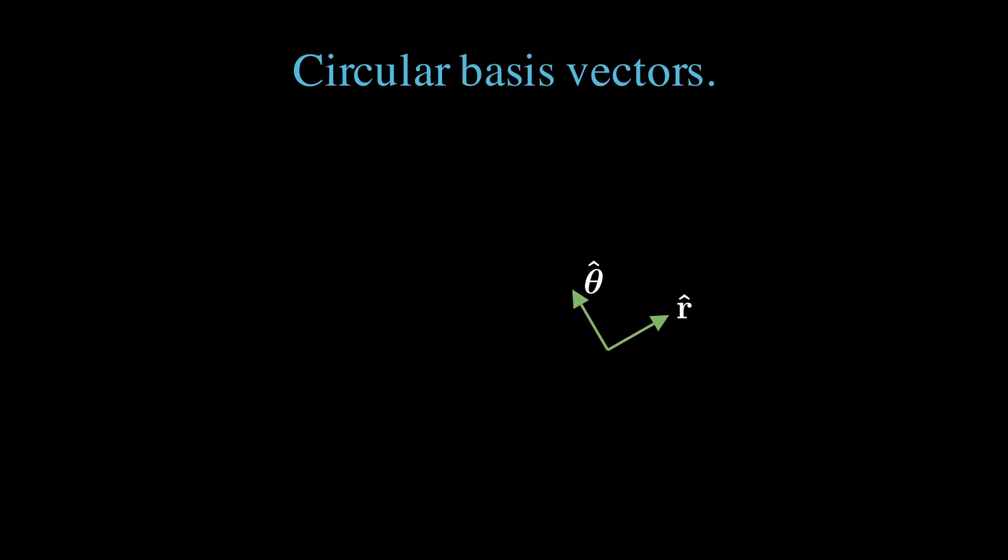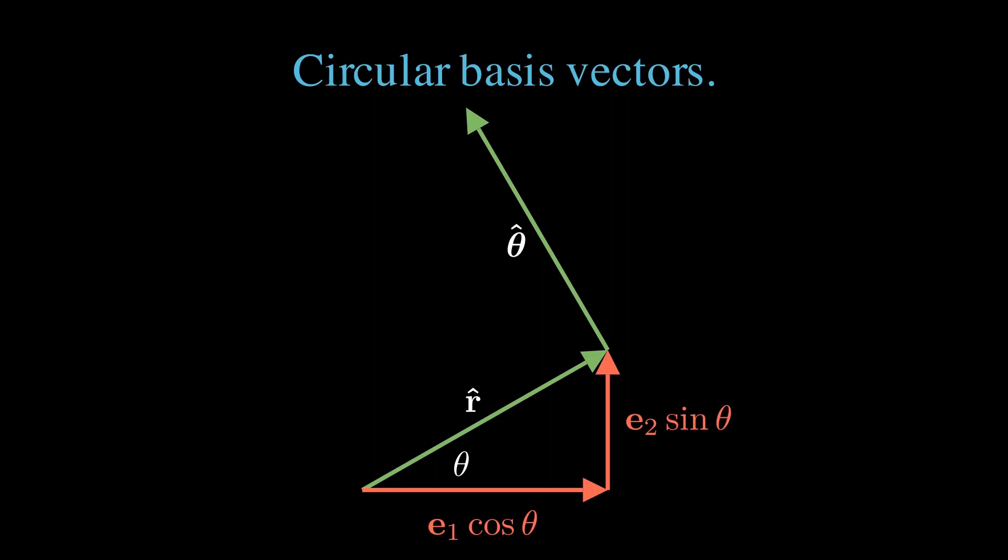Let's zoom in on these vectors so that we can describe them algebraically. With the radial unit vector r hat at an angle theta from the horizontal, it's clear that it equals e1 cos theta plus e2 sin theta.